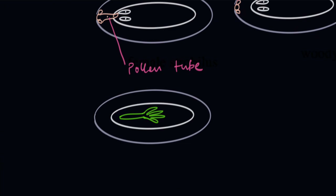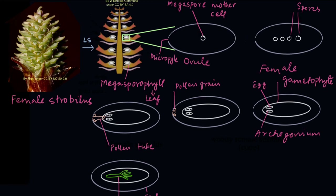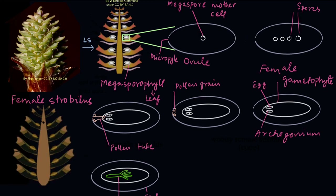After the zygote is formed, it grows by mitosis — the zygote divides repeatedly by mitosis to form the embryo. The entire structure that was once the ovule has now become the seed. The cone also matures, becoming more woody, and the structures that were ovules are now the seeds.